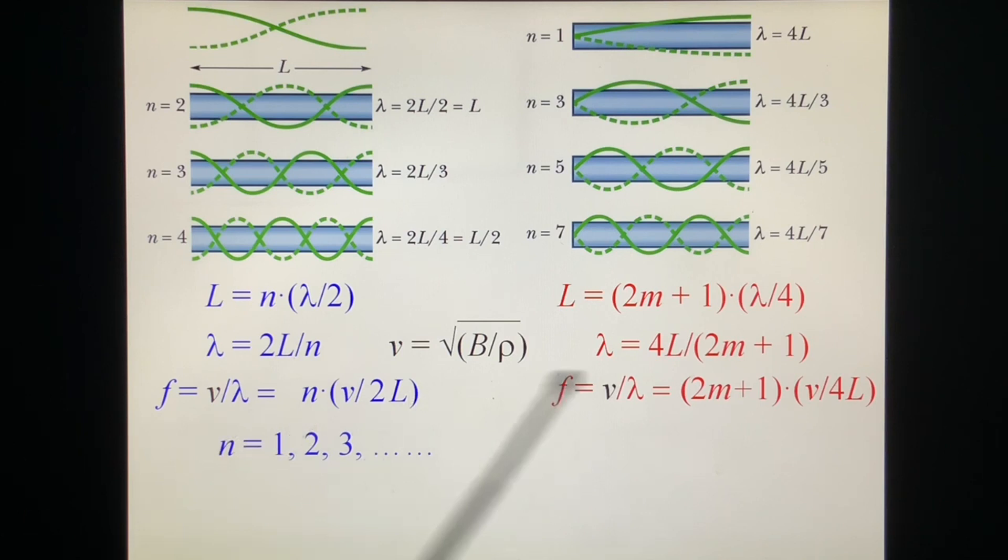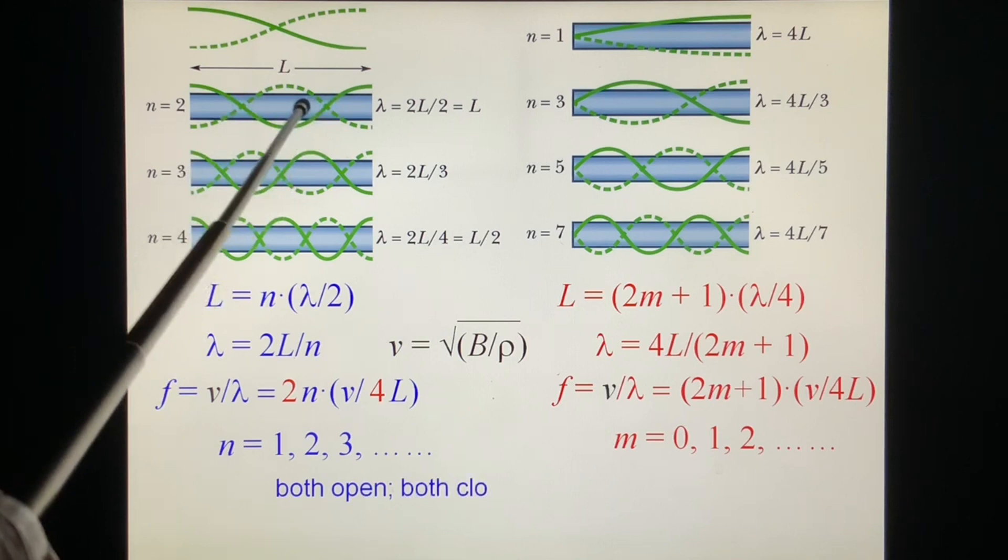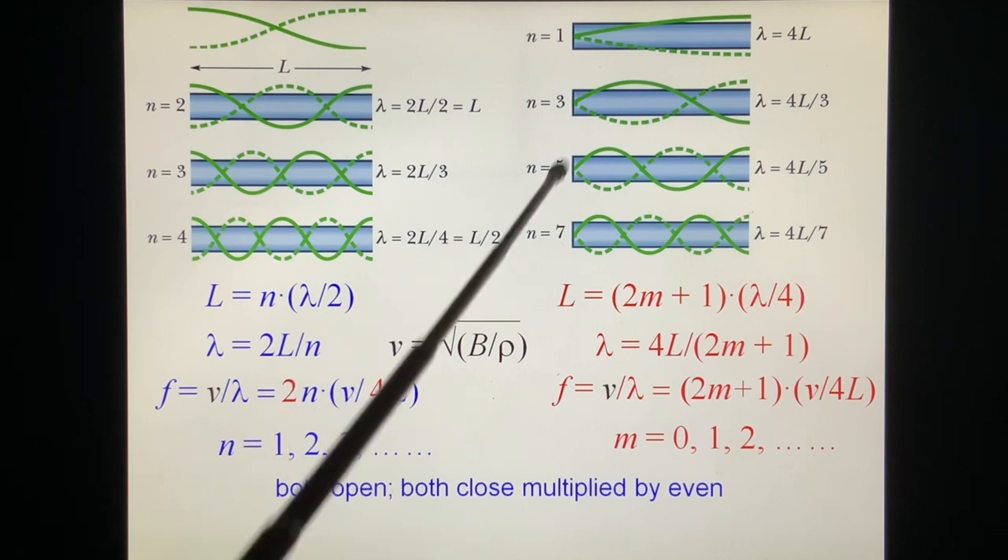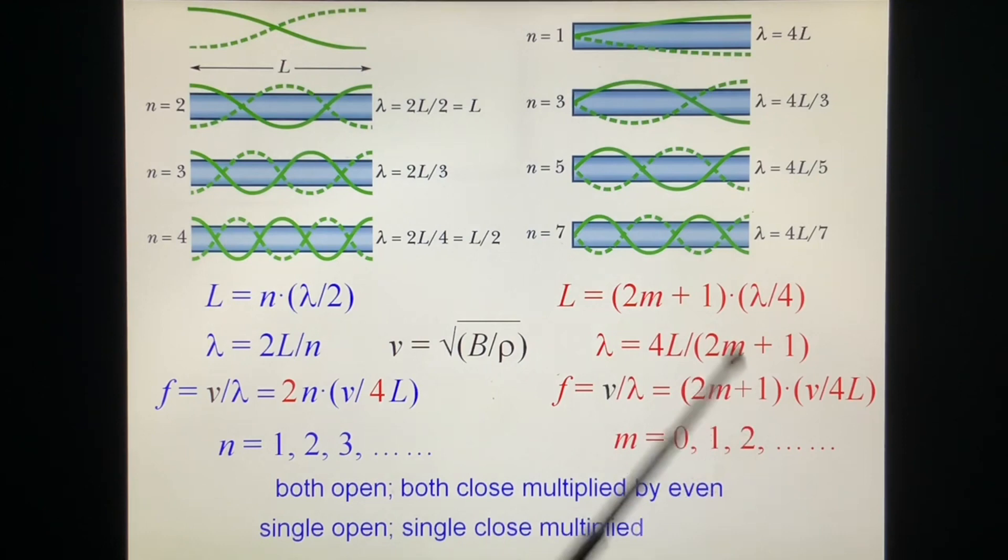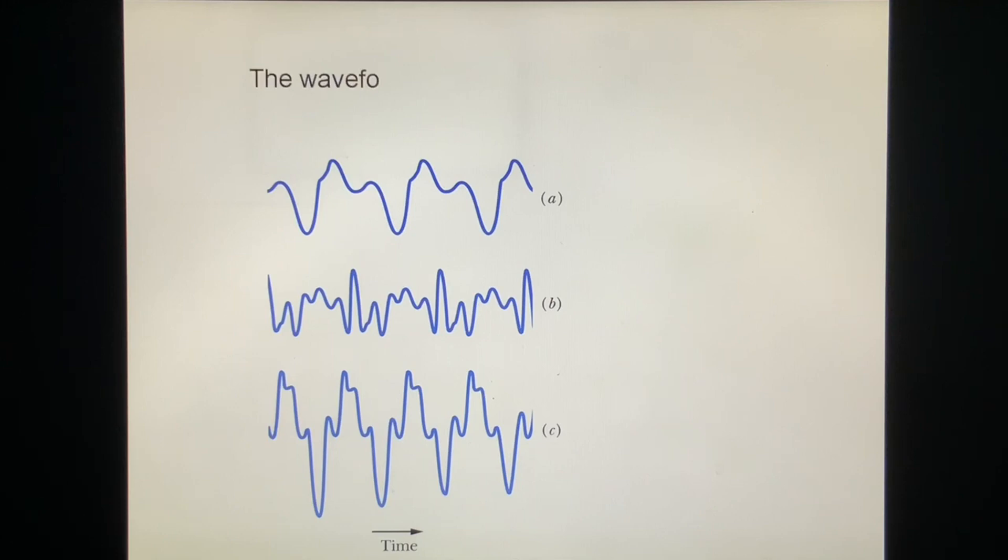Then we rewrite it. We rewrite this one. We make it to V over 4L too. So we multiply by, divide by two, multiply by two. We get it. This is V over 4L. V over 4L. This is even number. This is odd number. So what we have is, if this tube is both open, or both close, then we, this number, we take multiple by even number. If one close, one open, we multiply by odd number. That's very easy to remember.